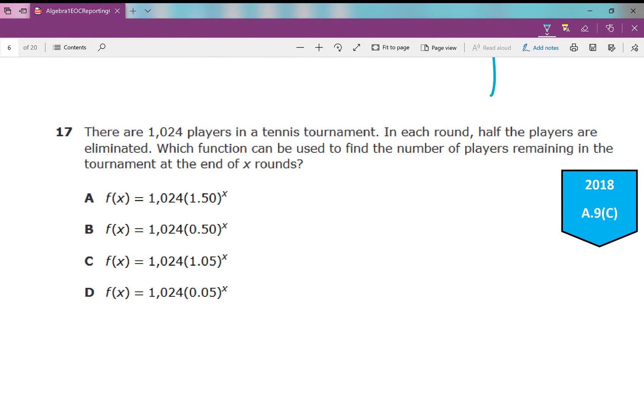Number 17. There are 1,024 players in a tennis tournament. In each round, half the players are eliminated. Which function can be used to find the number of players remaining in the tournament at the end of x rounds? This is typically more difficult for some students. If there are 1,024 players and in each round half are being eliminated, then that's consistent. Every single round, 50% of the players are eliminated, which is going to show you that it's exponential decay.